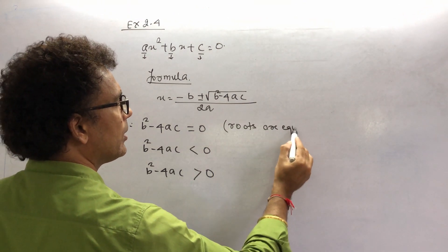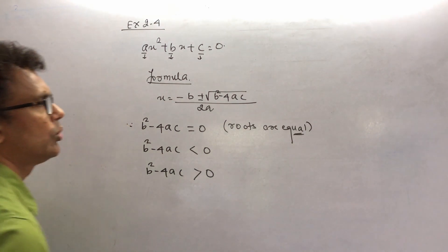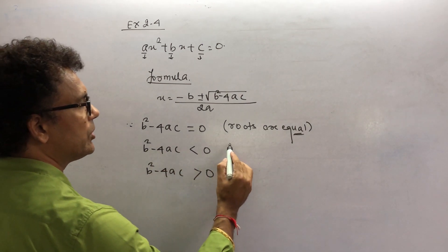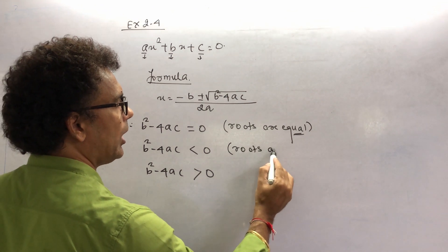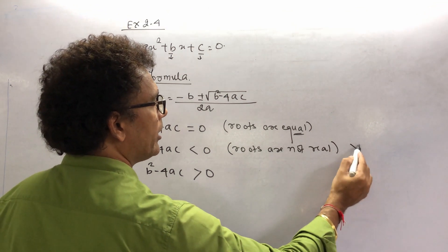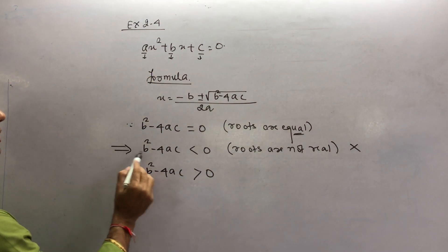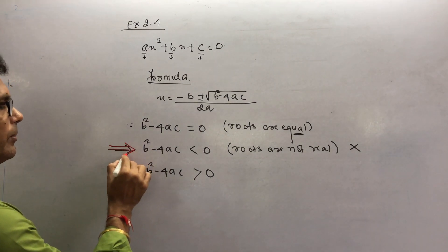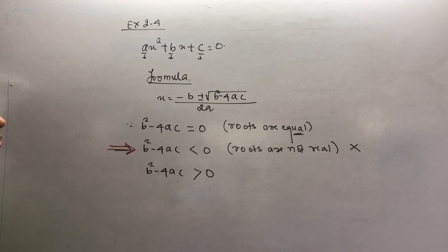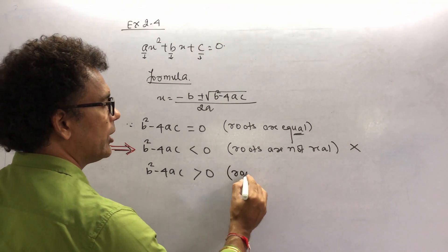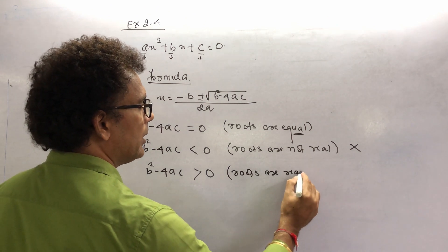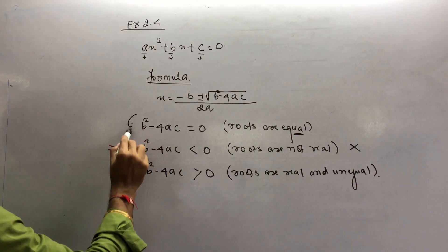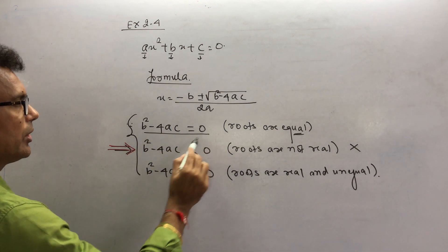If b²−4ac = 0, the roots are equal. If b²−4ac < 0, the roots are imaginary (no real roots). If b²−4ac > 0, the roots are real and unequal. You have to understand these three cases very clearly.